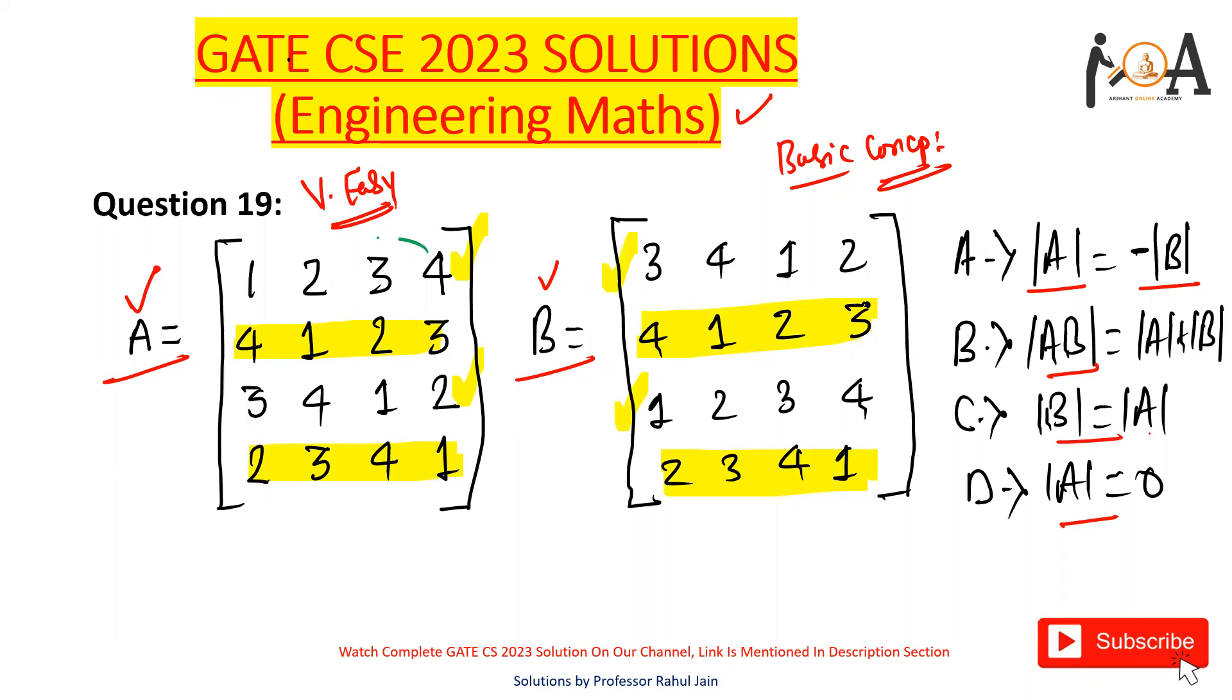We only need to interchange this first row with this third row. So we can do it like R1 equals R3 in matrix A. If we perform it, the resultant matrix will exactly become like matrix B. So matrix A will exactly become matrix B.